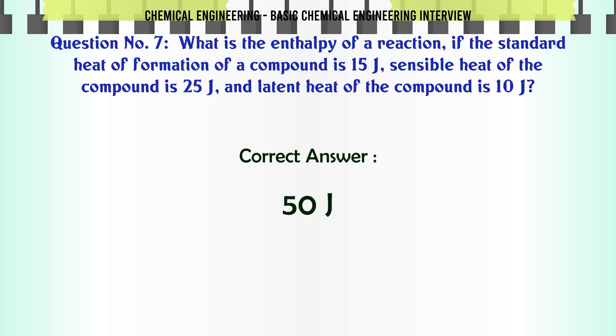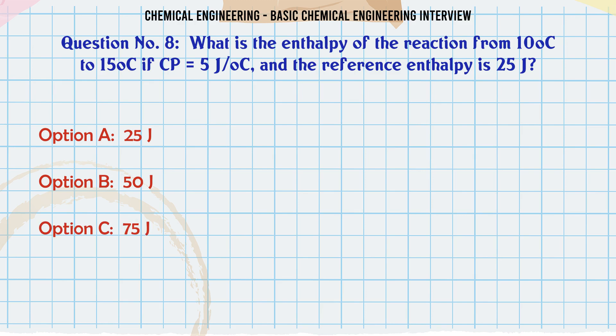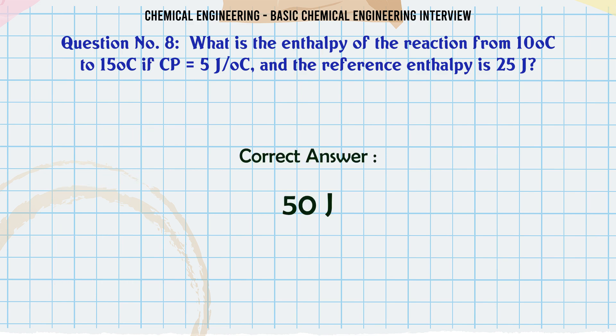What is the enthalpy of the reaction from 10°C to 15°C if Cp = 5 J/°C and the reference enthalpy is 25 J? A) 25 J. B) 50 J. C) 75 J. D) 100 J. The correct answer is 50 J.